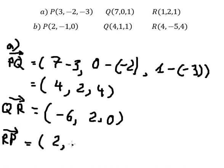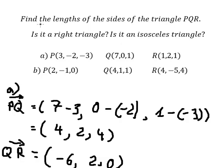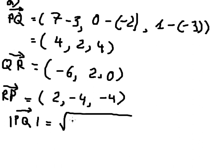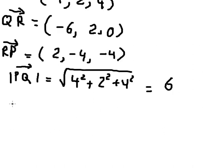For vector RB, we have three minus one, giving us two; then negative two minus two, giving negative four; and negative four for the last component. Now to find the side lengths of the triangle, we use the magnitude of each vector. For BQ, we put four, two, four inside the square root, each squared. We calculate this and get six.